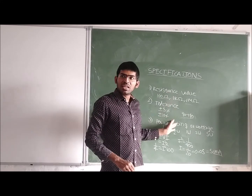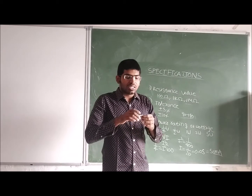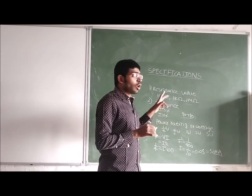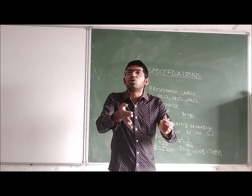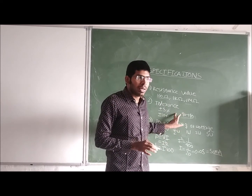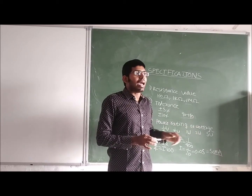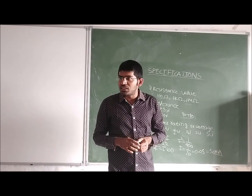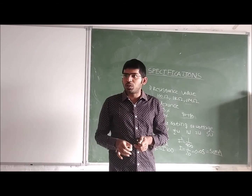These are the main specifications. First, resistance value — indicated on the resistor either by color code or printed directly. Second, tolerance — the variation of resistance from the indicated value, always expressed in percentage. Third, power rating or wattage — the maximum current a resistor can withstand without destroying, always expressed in watts.